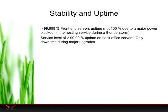Stability and uptime — that's really important. We have more than 99.999% uptime in the front-end servers. It could be 100% if we hadn't had a major power blackout during a thunderstorm at the hosting service — and of course, the UPS failed at that very moment. The lesson learned was to have a UPS for the UPS. We have a service level of more than 99.99% in the back-office server, and the only downtime is during major upgrades and patches.